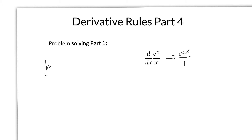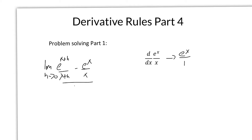So we take the limit as h approaches 0 of e to the x plus h over x plus h, minus e to the x over x, and then divide the whole thing by h.